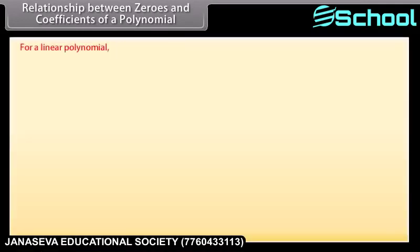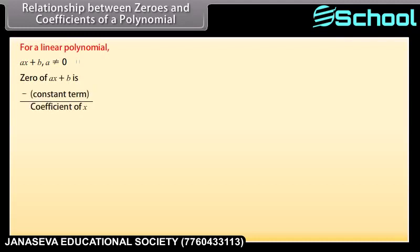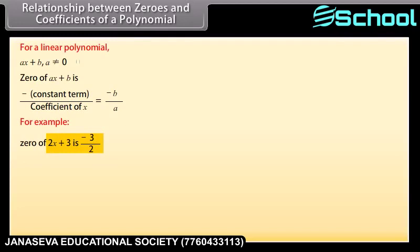Relationship between zeros and coefficients of a polynomial: For a linear polynomial ax plus b, where a is not equal to 0, the zero of ax plus b is minus constant term upon coefficient of x, which equals minus b upon a. For example, the zero of 2x plus 3 is minus 3 upon 2.